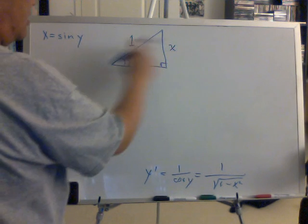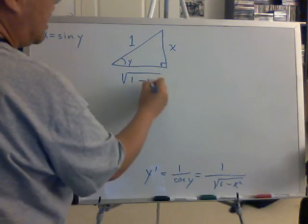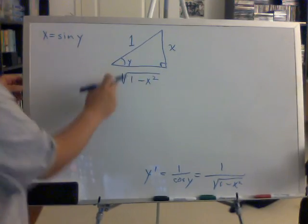So once you know the height and hypotenuse, you can determine the base would be square root of 1 minus x squared. And this seems more obvious.